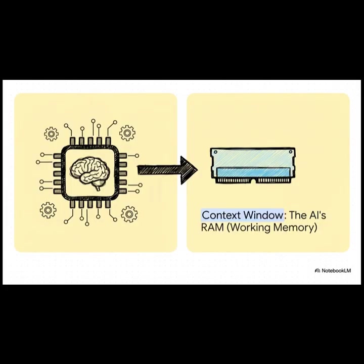To really get our heads around this, let's use a metaphor we're going to keep coming back to. Think of the LLM — the big language model — as the AI's CPU, its brain, the central processor that does all the actual thinking. The context window then is its RAM, its working memory. And just like the RAM in your computer, it is super fast, but it's also very, very limited.